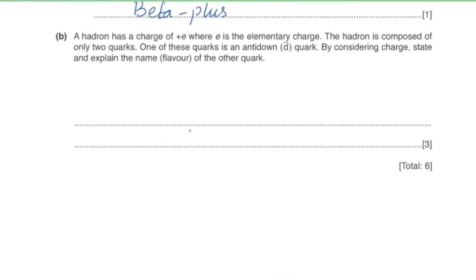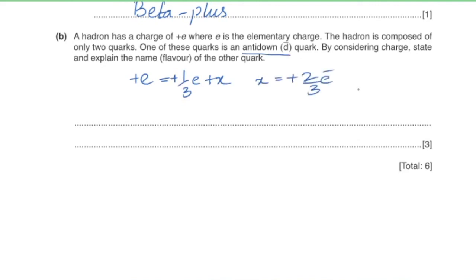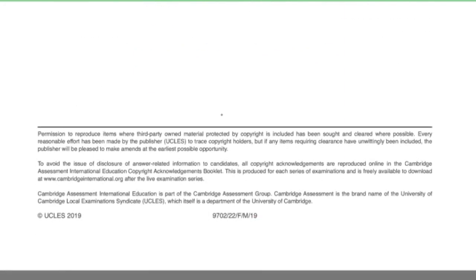Part b: a hadron has a charge of +e and is composed of only two quarks. One quark is an anti-down quark with charge +1/3 e. The remaining charge needed is +2/3 e. The only quark flavour with charge +2/3 e is the up quark. Therefore the other quark is an up quark with charge +2/3 e.